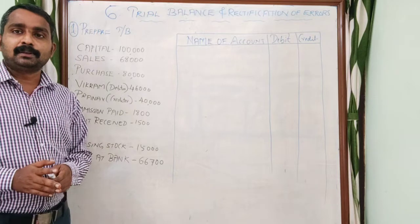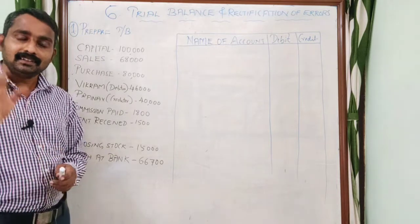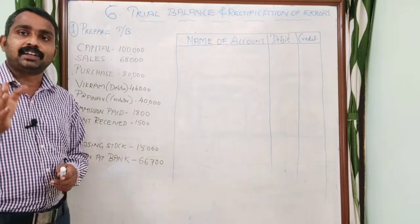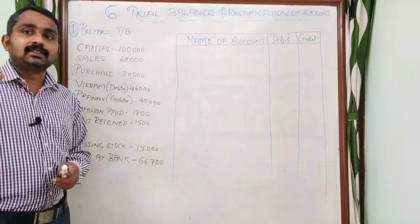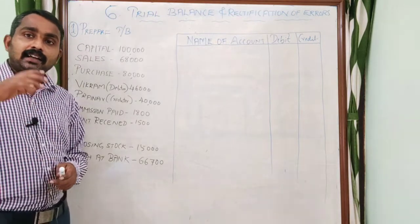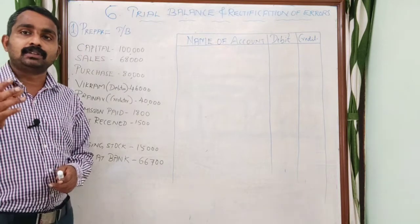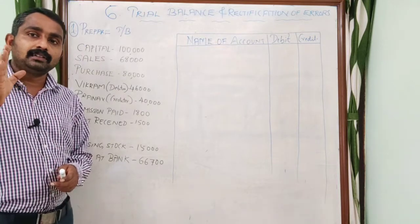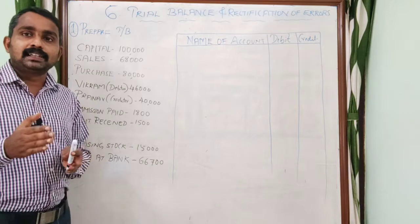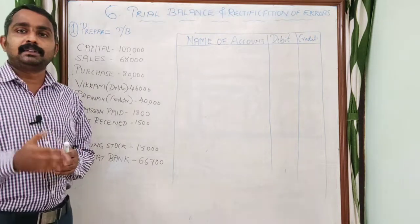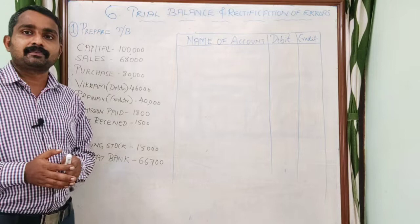What do you mean by trial balance? It is a statement which shows the balances of all ledger accounts and it is prepared with an intention of checking the arithmetical accuracy of the ledger accounts. It also acts as a basis for preparing financial statements like a trading account, profit and loss account, and balance sheet.